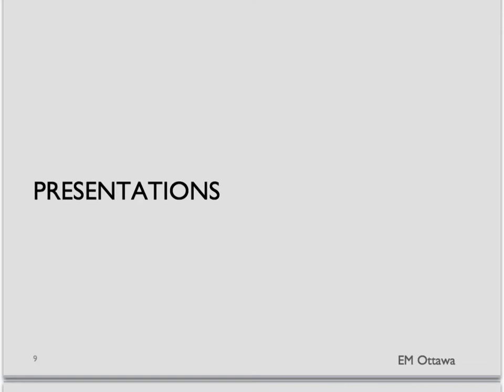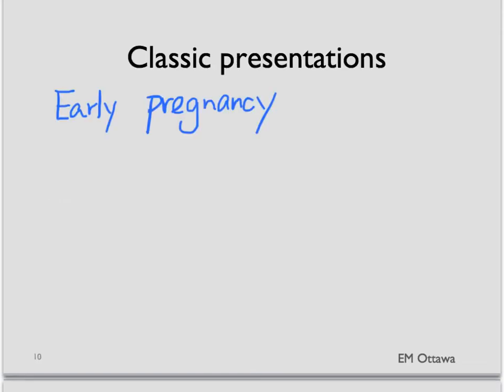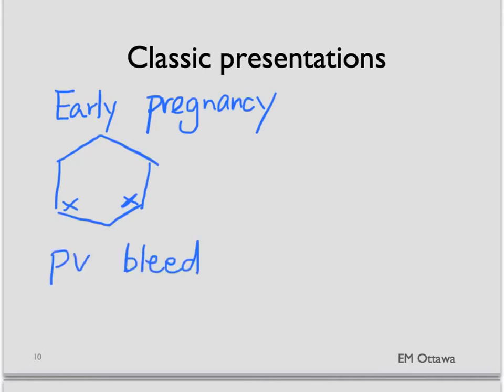In the classic presentation, patients should be in the first stages of pregnancy. They present with one-sided abdominal pain that is usually in the lower area, and they might present with some vaginal bleeding. If they have ruptured due to blood loss into the pelvis, they might also present with syncope. If the patient presents with these four findings, you really want to think that the patient has a ruptured ectopic pregnancy.